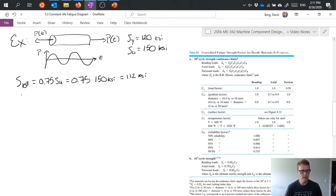We also need to know our infinite life endurance limit where we say it's equal to S'N times CL, CG, CS, CT, CR and we can go through and figure out what each of these is.